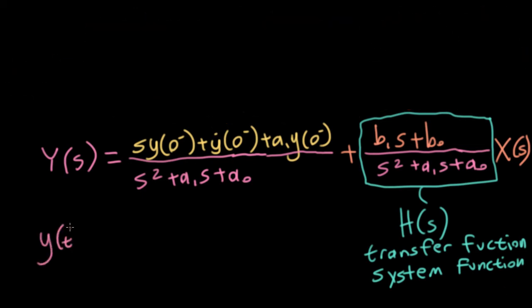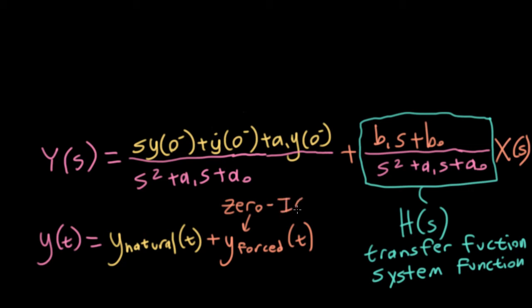So inverting the Laplace transform, we could say that our time domain output consists of two terms. One of them we can call the natural response, and the other we can call the forced response. We've also referred to the forced response as the zero state, or I like to say the zero initial condition response. So this is what you get if you have zero initial conditions, but you have some kind of input going into the system. Whereas the natural response, we can think of that as the zero input response.